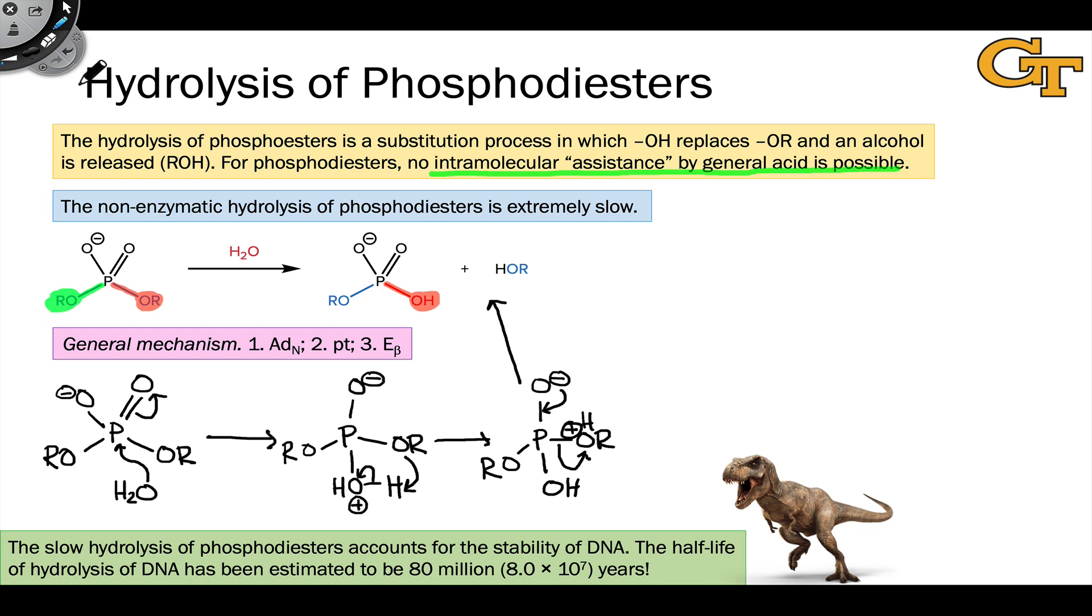This mechanism helps us see pretty clearly why the hydrolysis of phosphodiesters is relatively slow. Even in the presence of a catalyst, say a basic catalyst, to deprotonate water, we're still going to end up with negative charge on oxygen in this intermediate, which is completely avoided in the hydrolysis of phosphomonoesters. And that's a problem. In this uncatalyzed process, we see both negative charges and positive charges in the same molecule, and that is kinetically a big problem, and it's going to suggest a high activation energy.